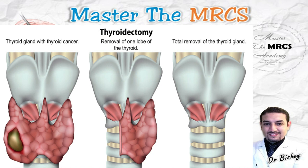Should we do total thyroidectomy or hemithyroidectomy? According to MRCS guidelines, we tend to remove the whole thyroid gland if the nodule is bigger than 2 cm. If below 2 cm, go for hemithyroidectomy — removing half of the thyroid gland with the isthmus. For a suspicious thyroid nodule, the cutoff is 2 cm: below 2 cm, hemithyroidectomy; above 2 cm, total thyroidectomy, even if found in one lobe.